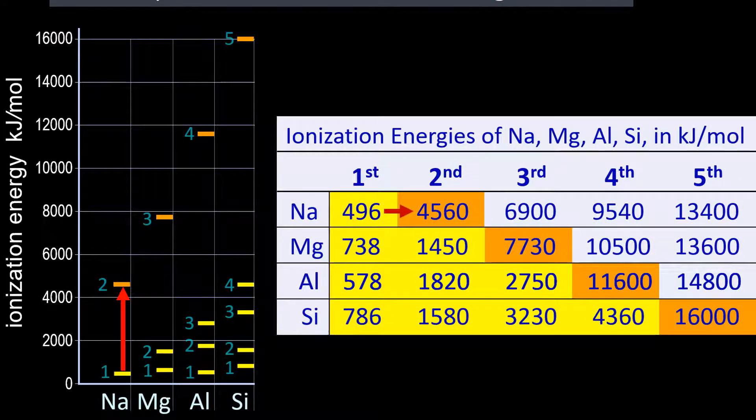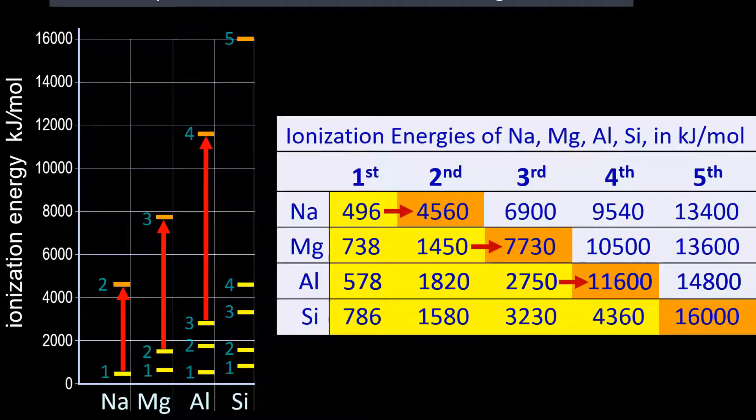Sodium loses one valence electron to get to the ten electrons of the neon configuration, so there is a big jump at the second IE. Magnesium loses two electrons to become stable, so the big jump is at the third IE. And silicon loses four electrons to get to the core, and so its big jump is at the fifth ionization energy.